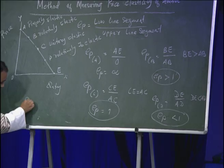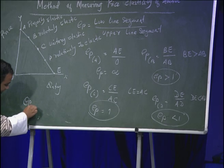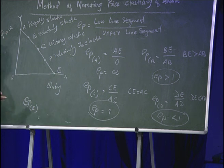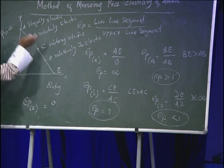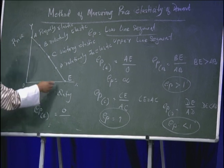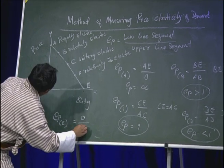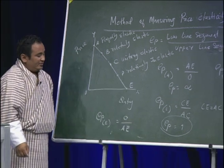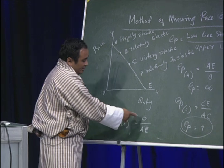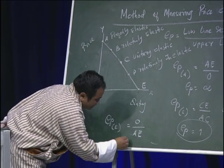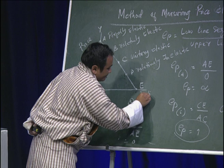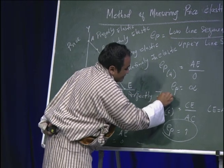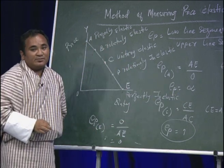At point E, EP: the lower segment — there is no line below E — so the lower segment is 0, and the upper segment is AE. Therefore, 0 divided by any number equals 0. This means it is perfectly inelastic demand.